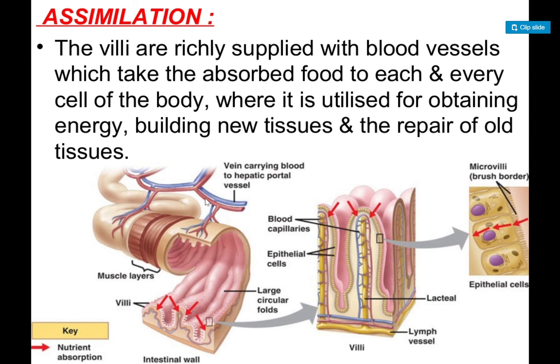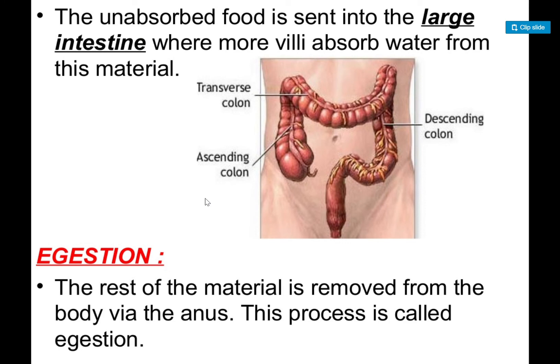Whatever nutrients we get from food, when our body uses them to sustain life — for health and survival — we call that assimilation. After assimilation, our unabsorbed food, which is the waste product remaining after digestion, goes to our large intestine. The large intestine absorbs water from this undigested, unabsorbed waste. After the water is taken, all remaining nutrients have been extracted, and at the end the waste is removed from our body. This process is called egestion.